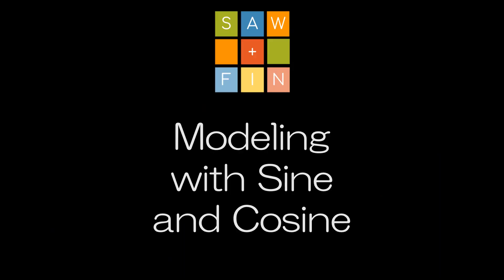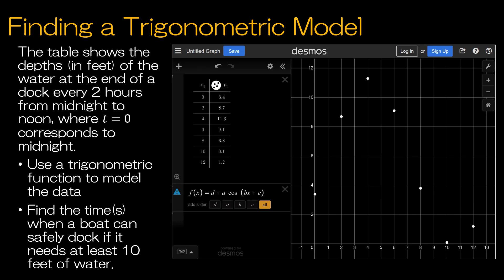Modeling with sine and cosine. I wanted to end with an application with mathematical modeling. Now, in your textbook, they use this exact same example, but they take you through how to find any of these values manually. So what we're dealing with is a table that shows the depths in feet of the water at the end of a dock every two hours from midnight to noon where t equals zero corresponds to midnight. They want us to use a trigonometric function to model the data and then find when a boat can safely dock if it needs at least 10 feet of water. So, again, in your textbook, they take you through how to find the amplitude by hand, how to find everything by hand. I'm going to show you how to use Desmos because, as we know, when we, as people, are drawing a best fit line, we don't do as good of a job as a computer can do. So I'm going to show you this way. If your homework makes you go through and find each of those things, you can find those examples in your text.